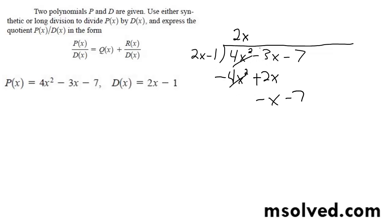So that goes into there minus 1 half times. And then we get negative x plus 1 half. Switch signs. We get a remainder of negative 7. Actually negative 15 over 2.